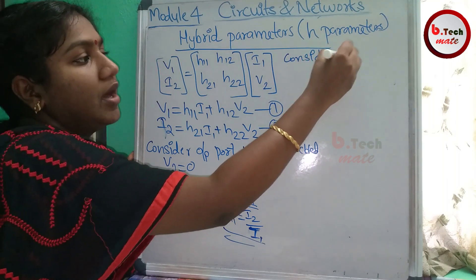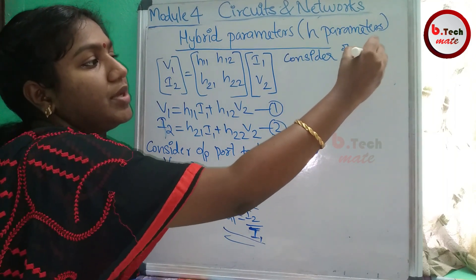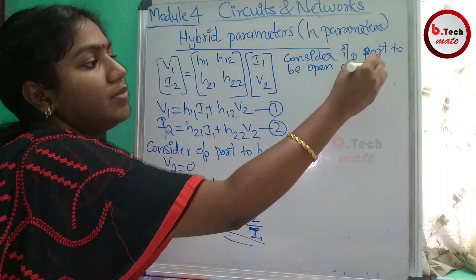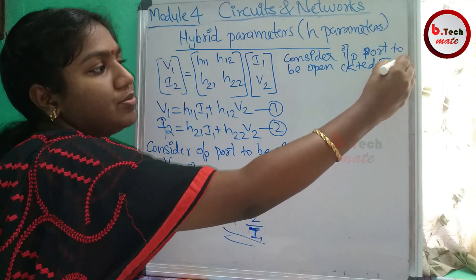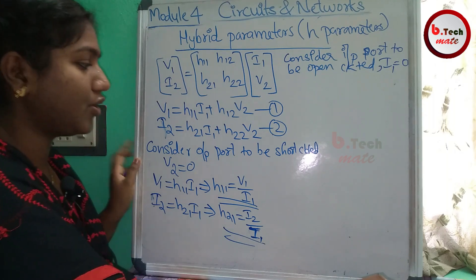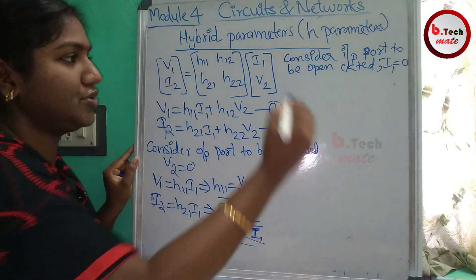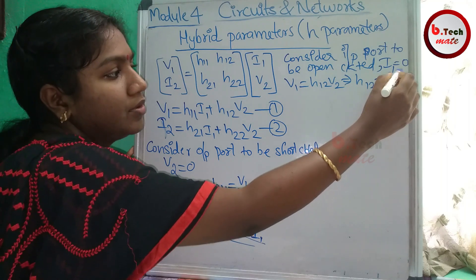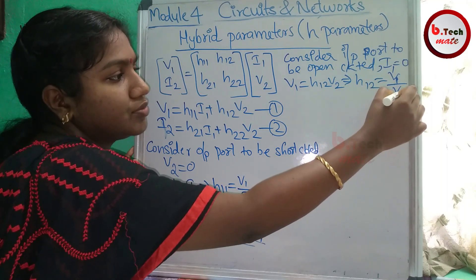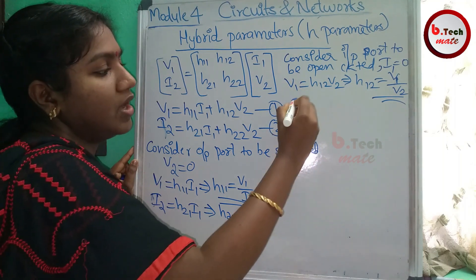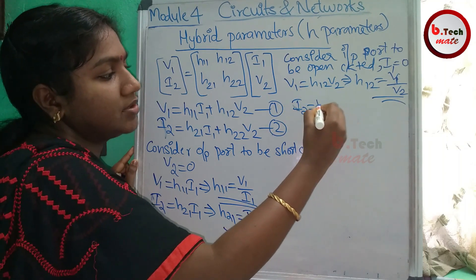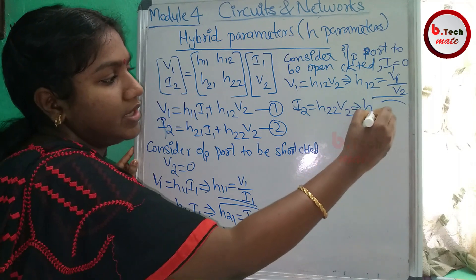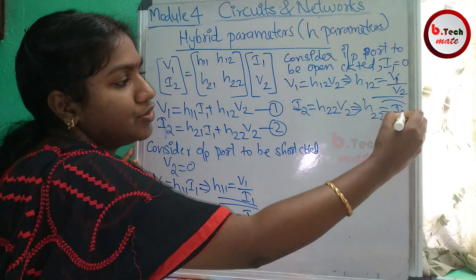Now consider the input port to be open circuit. When the input port is open, the current I1 is 0. Substituting I1 = 0 into the equations: V1 is equal to H12·V2, so H12 is equal to V1 by V2. And I2 is equal to H22·V2, so H22 is equal to I2 by V2.